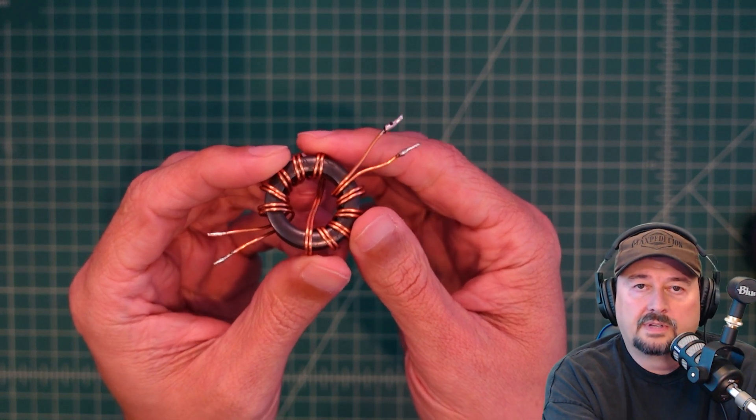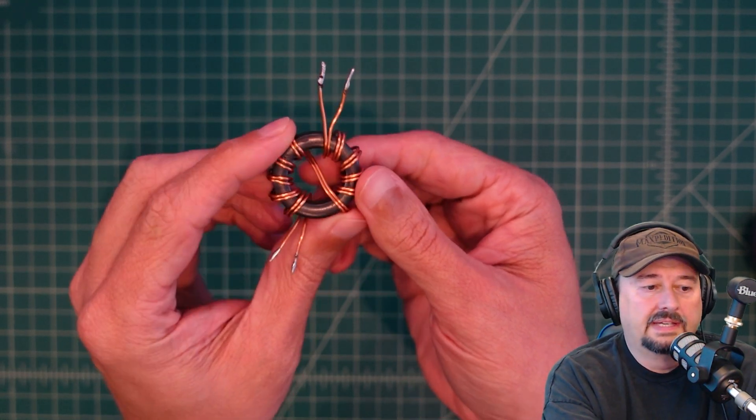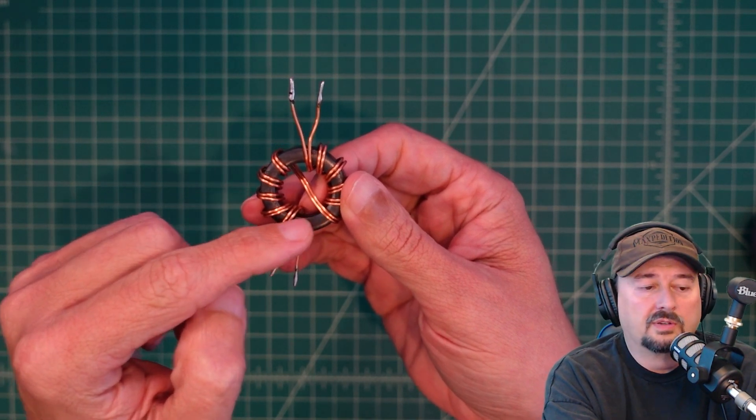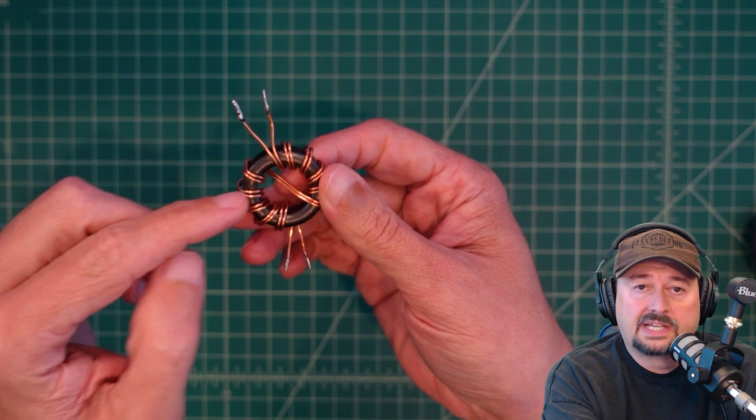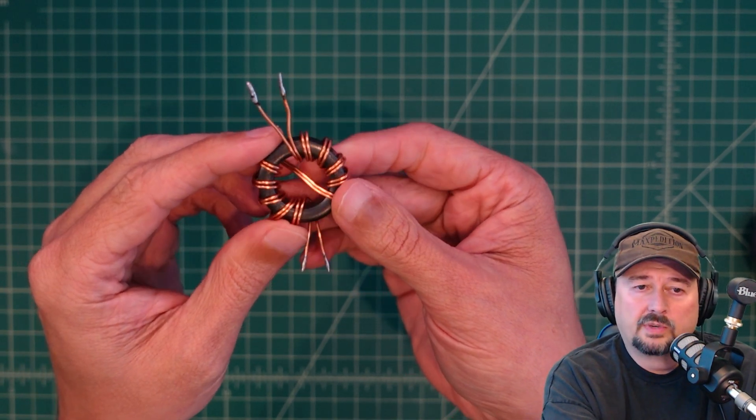All right folks, so today we're going to take a look at this, it's a core, it's a toroid core for a balun choke to suppress common mode current. We're going to talk a little bit about how they work and what they are.